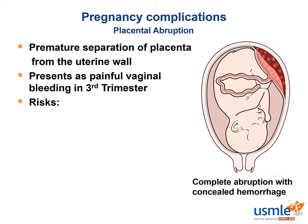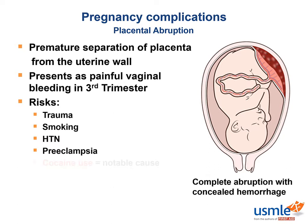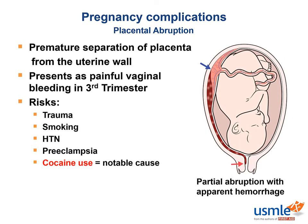In terms of risk factors, you worry about this condition in patients suffering trauma, like a seat belt after a high-speed motor vehicle accident. Smokers tend to have high blood pressure, which could also predispose them to preeclampsia. And especially on the boards, remember that moms who use cocaine are at a very high risk for abruption. Also be aware that there are both complete and partial types of abruption.